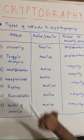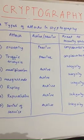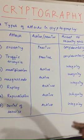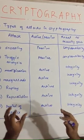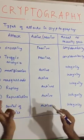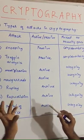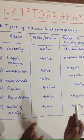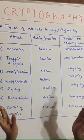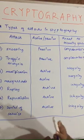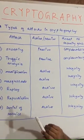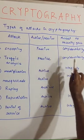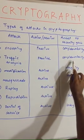Another attack is traffic analysis. Traffic analysis is similar to snooping, but in traffic analysis the intruder can also determine where the message is coming from, where it is going, and what the message contains. It is also a passive attack and again a threat to confidentiality.